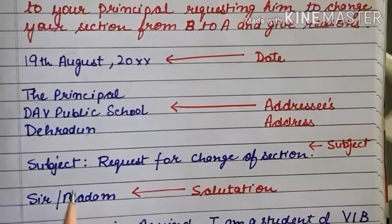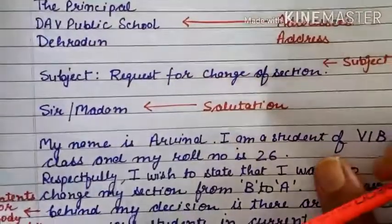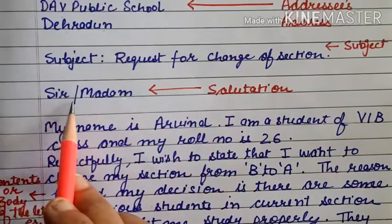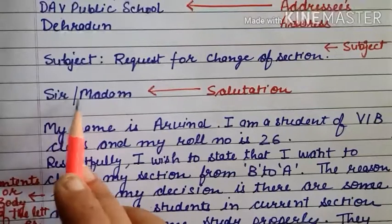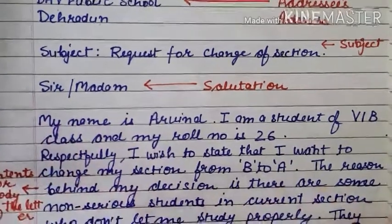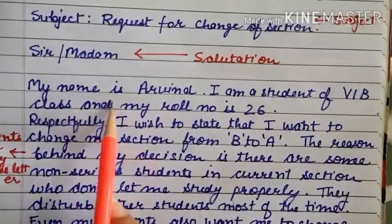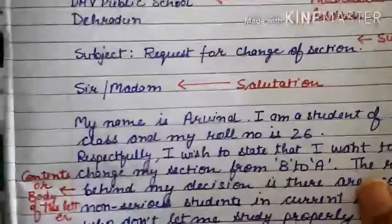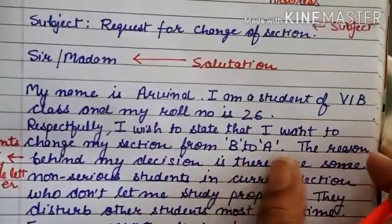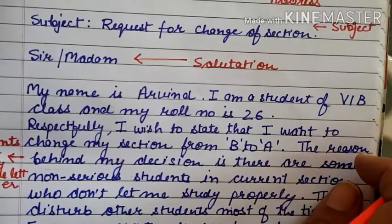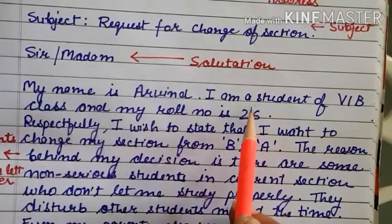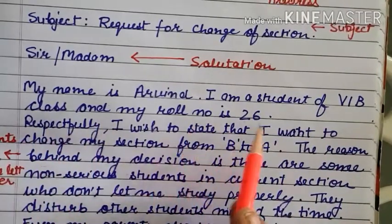After the subject and a line gap, write the salutation. Salutation means how to address them — 'Sir' or 'Ma'am.' If your principal is a ma'am, write 'Ma'am'; if a sir, write 'Sir.' Then begin the body: 'Respectfully, I wish to state that I am a student of class 6th B and my roll number is 26.'